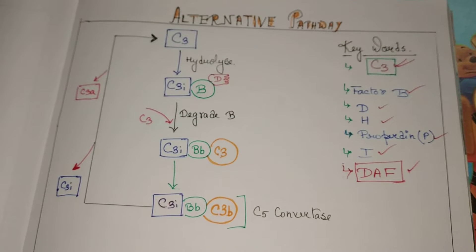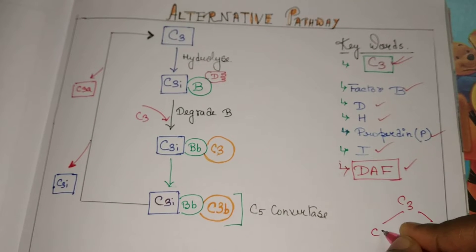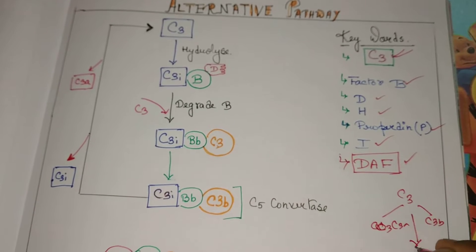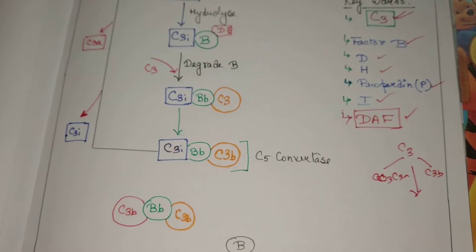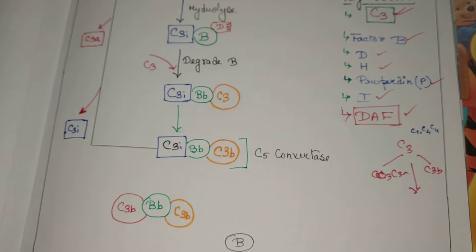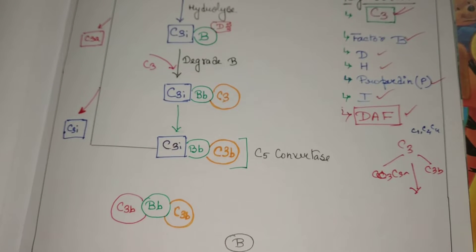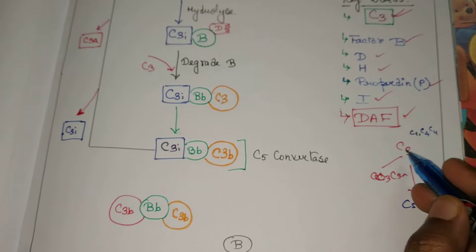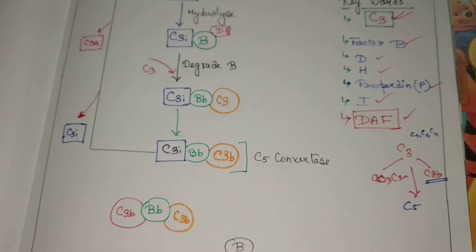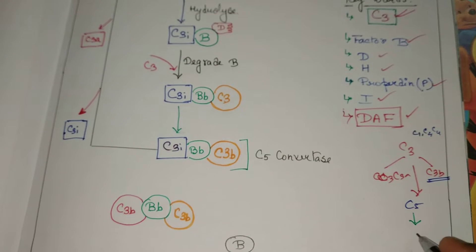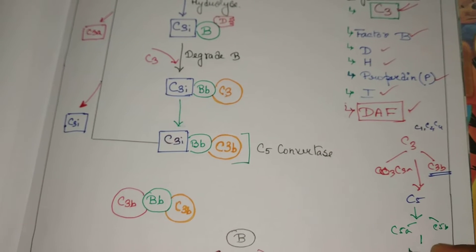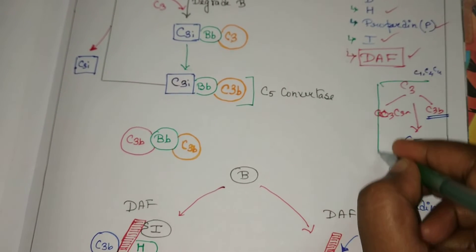When C3 is hydrolyzed into C3a and C3b, it forms a C5 convertase with the help of C1, C2, and C4 factors. The C3b then forms the C5 convertase to convert C5 into C5a and C5b, after which it undergoes the lytic cycle.